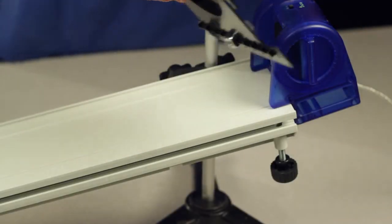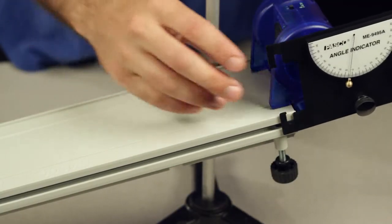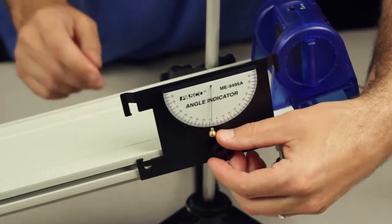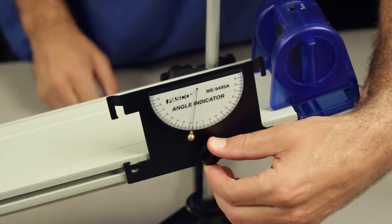To mount the angle indicator to a PASCO Dynamics track, slide the square nut on the indicator into the T-shaped slot on the side of your track. Slide the indicator to any desired position and use the thumb screw to lock it in place.